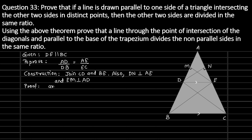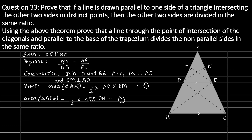Area of triangle ADE — we get the area of a triangle as half times base times height. For triangle ADE, taking AD as the base, the perpendicular height would be EM. Mark this as equation 1. Again, for the area of triangle ADE, we can take AE as the base and DN as the perpendicular. Mark this as equation 2.